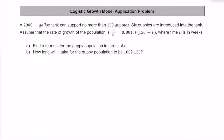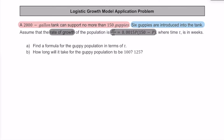Let's talk about how to solve a logistic growth model application problem together. For this particular problem, we have a 2,000 gallon tank that can support no more than 150 guppies. Initially, 6 guppies are going to be introduced into this tank. We're given an equation that represents the rate of growth for this population: dp/dt is equal to 0.0015p times the quantity of 150 minus p. Time is going to be measured in weeks.